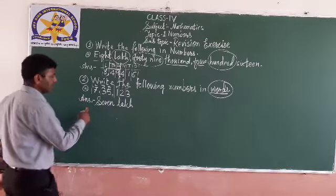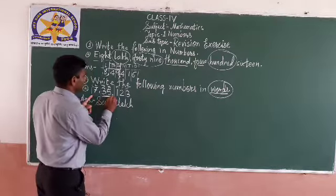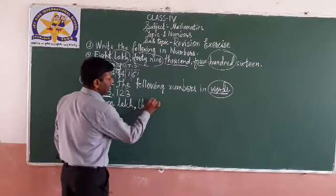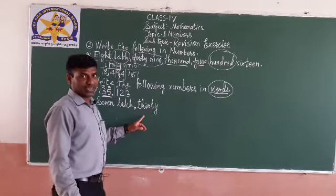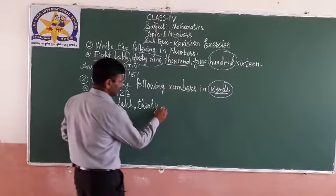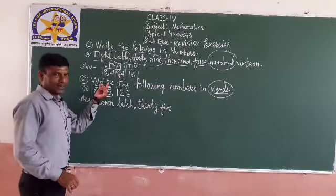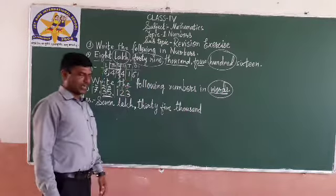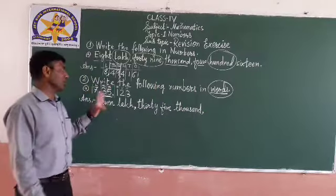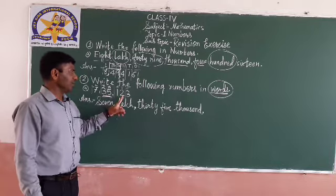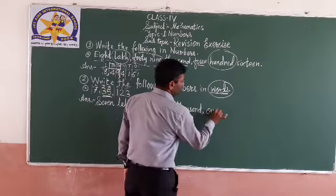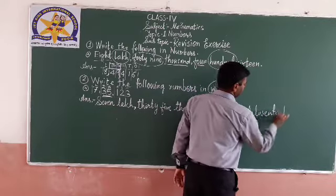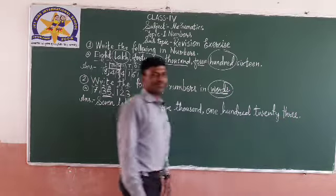I will make one special video on that. So 35 is in the thousands period — 35,000. Thirty — spelling is T-H-I-R-T-Y. Then 1 is in the hundreds place, so 123 is one hundred twenty-three. You should put commas — this is very important.